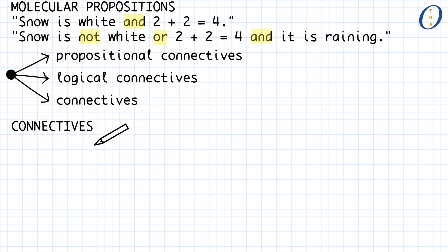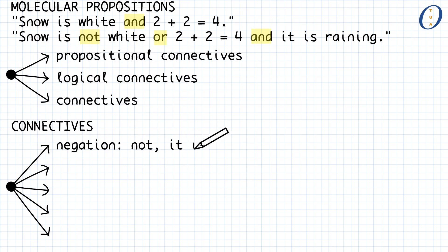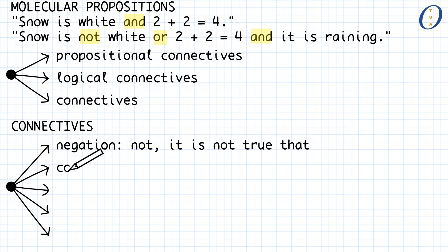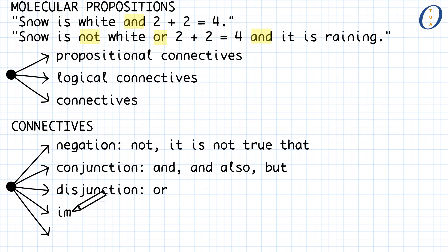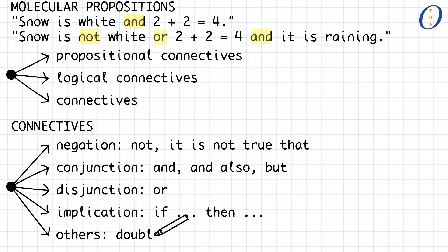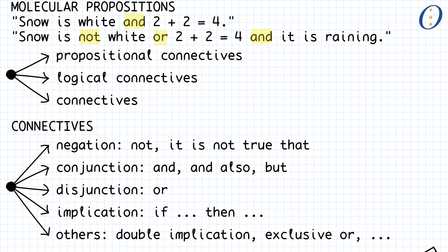The words used in propositional logic to connect small propositions in order to build larger propositions are called propositional connectives, or logical connectives, or sometimes just simply connectives. There are many connectives in propositional logic. The most common ones are negation, which is expressed by words such as 'not' or 'it is not true that'; conjunction, expressed by words such as 'and,' 'and also,' or 'but'; disjunction, typically expressed by the word 'or'; and implication, which is typically read 'if...then.' There are also some other connectives, but they can all be expressed in terms of these, so we will not delve into them.